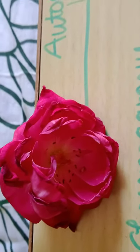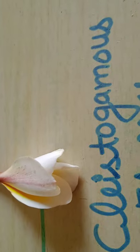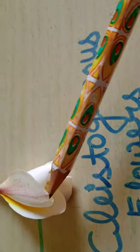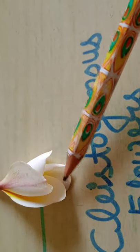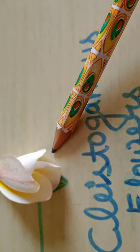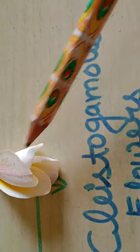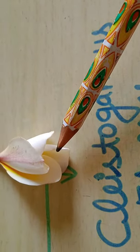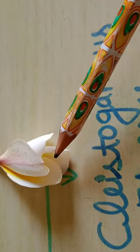Now let us come to the cleistogamous flower. Here is the cleistogamous flower — the anther and stigma are not exposed, and the covering is very tight. Because of this, cross-pollination is not possible and there are 100% chances of self-pollination.